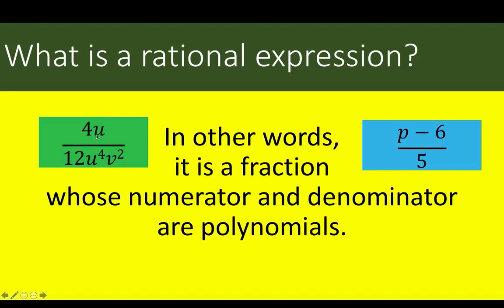For example, 4u over 12u to the fourth v squared is a rational expression because its numerator is a polynomial and its denominator is a polynomial. Similarly, p minus 6 over 5 is a rational expression because p minus 6 is a polynomial, and the constant 5 is also a polynomial.